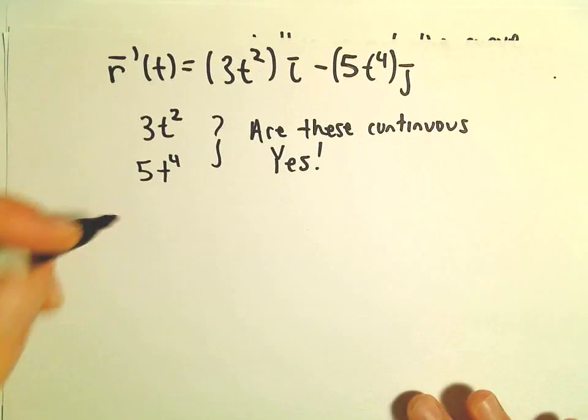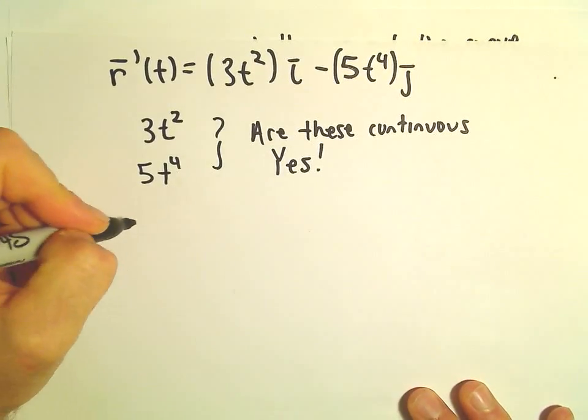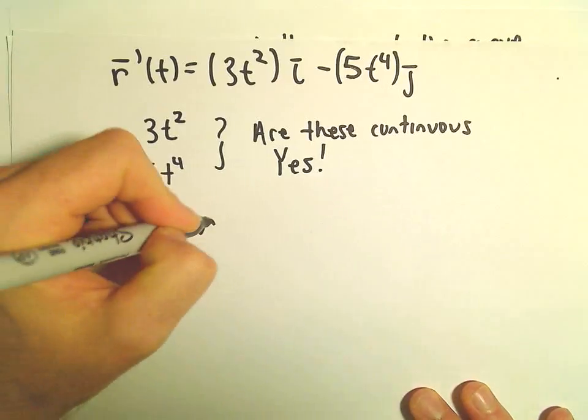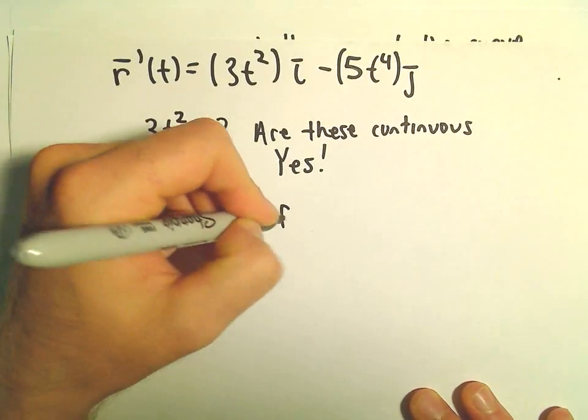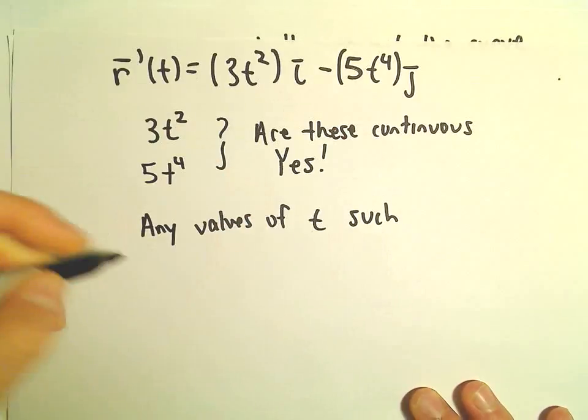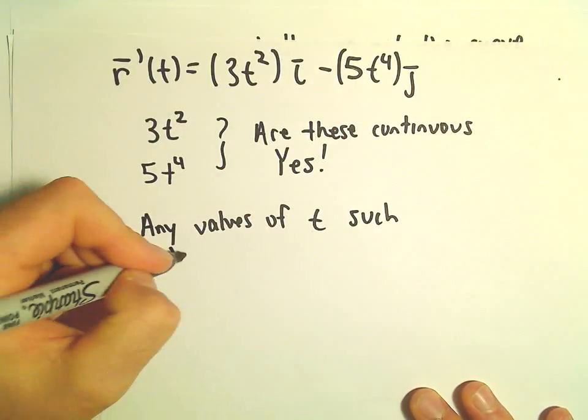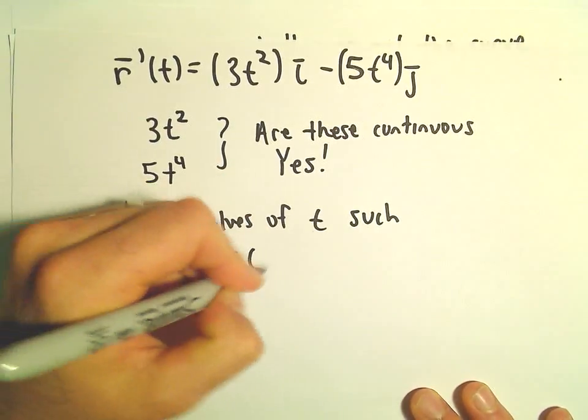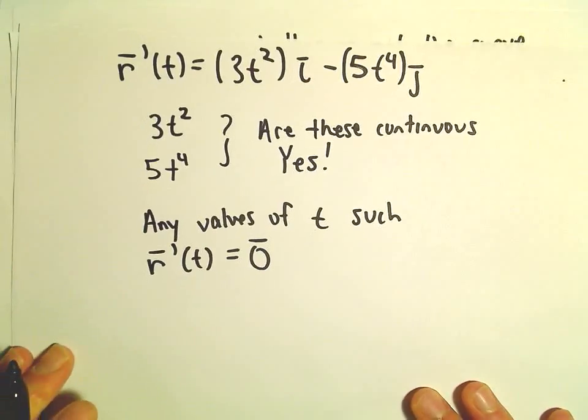Kind of the next question we have to ask ourselves, are there any values of t such that r prime of that t is going to give us 0, the 0 vector?